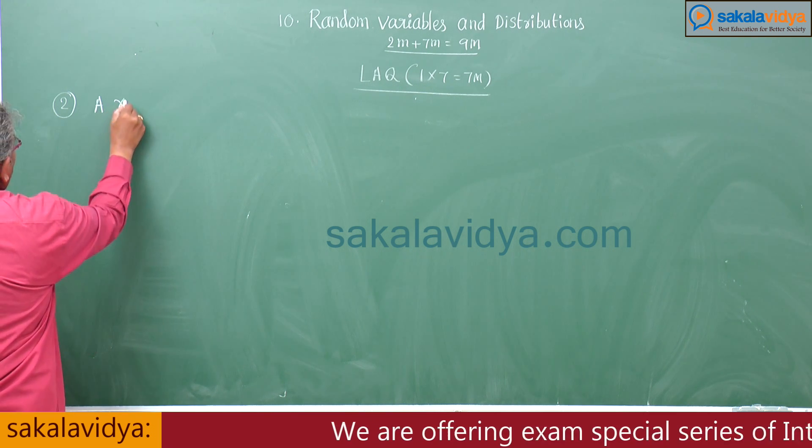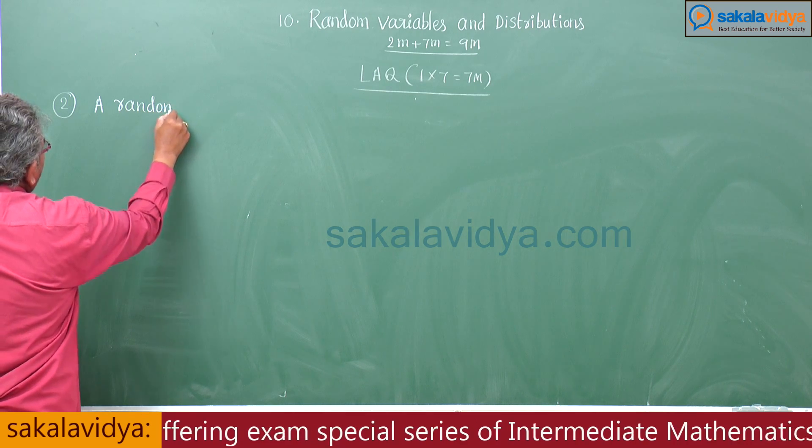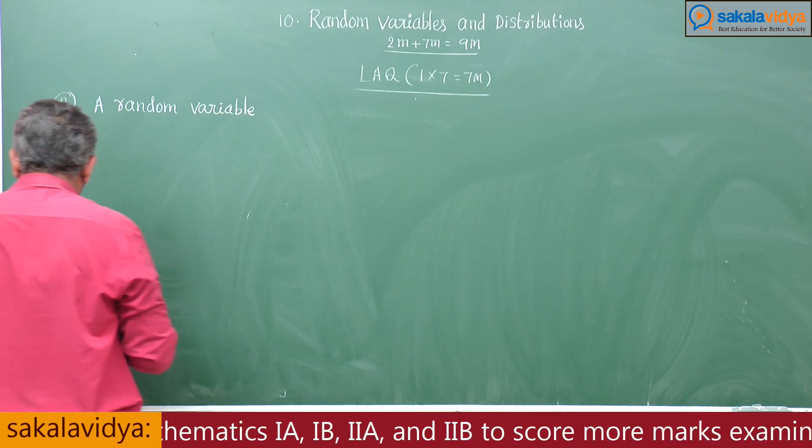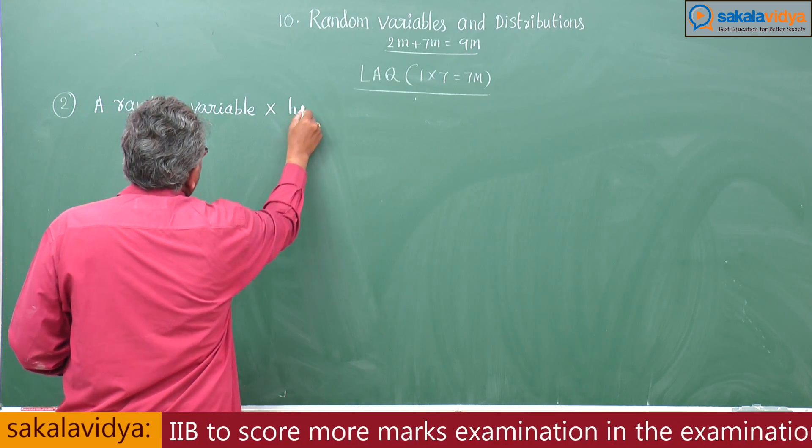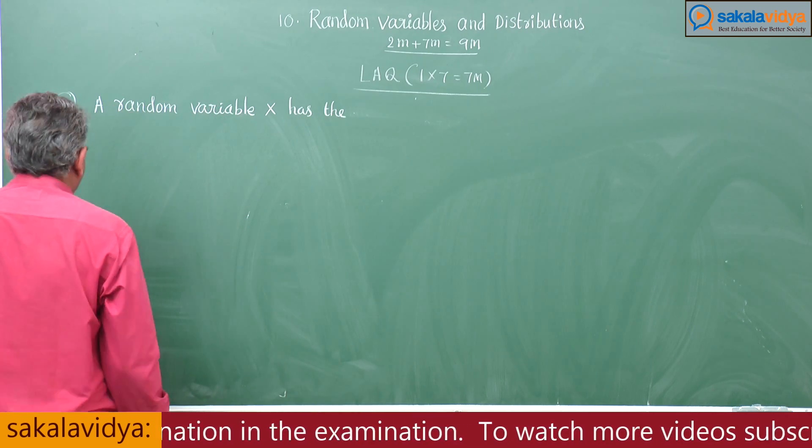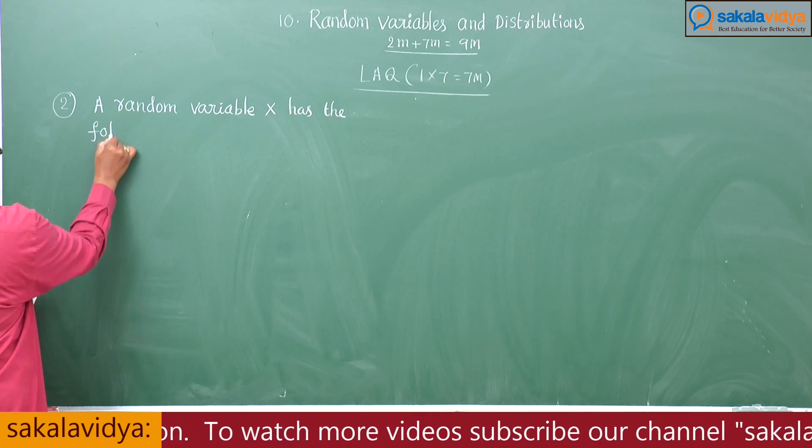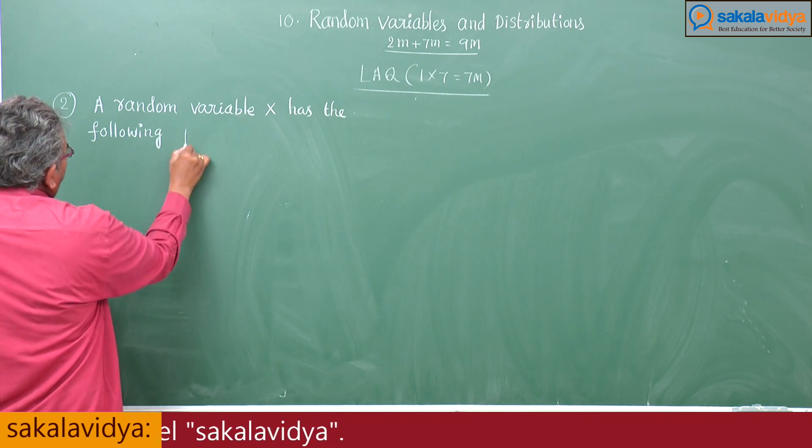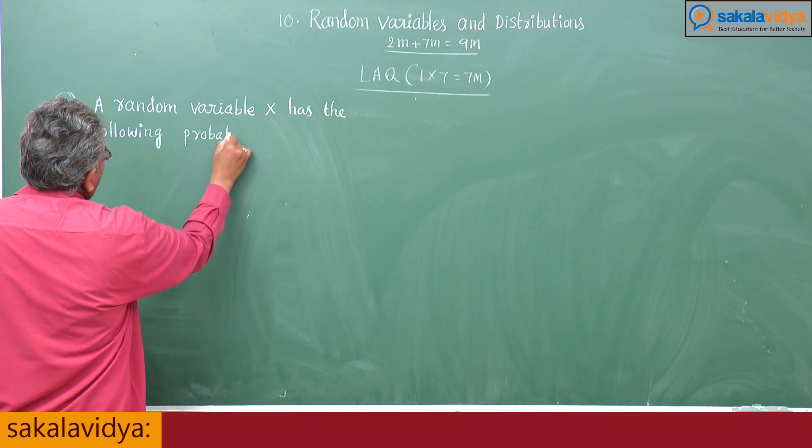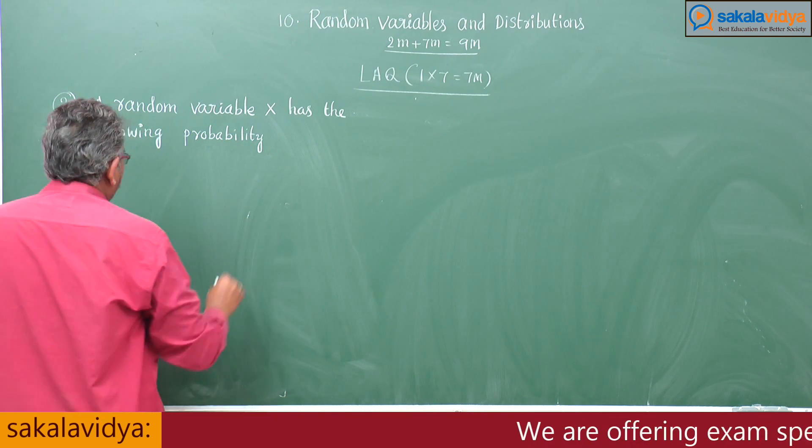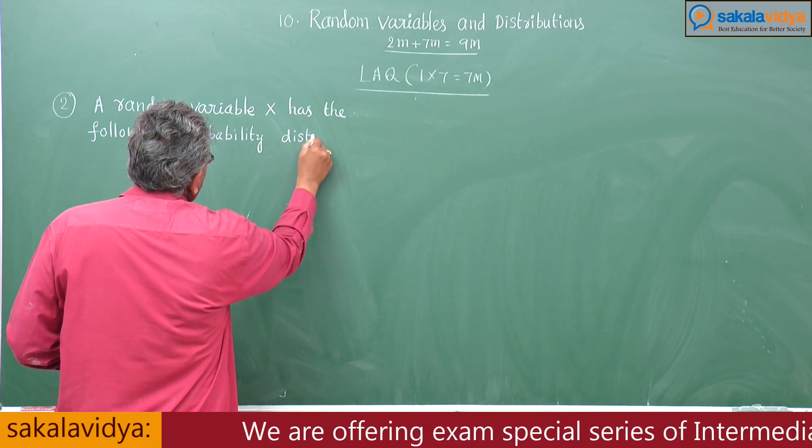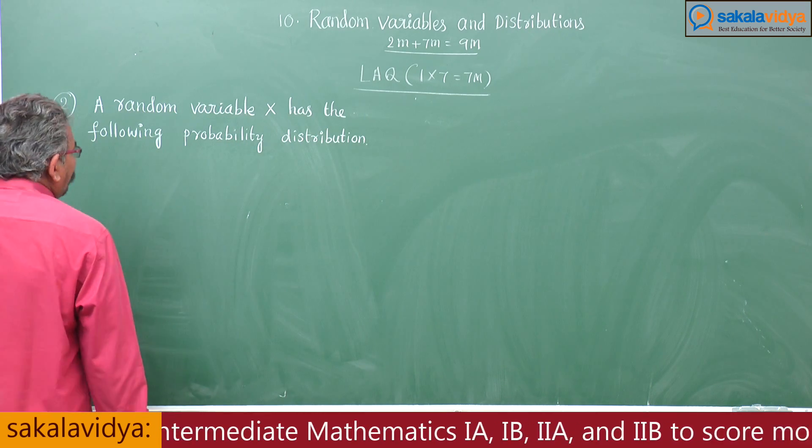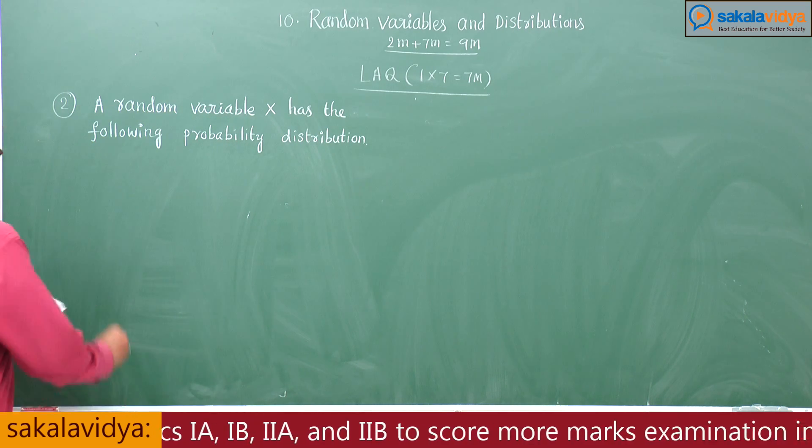A random variable capital X has the following probability distribution. We'll create a table for this probability distribution.